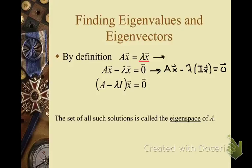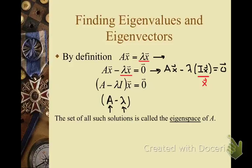Notice that in the next step I want to combine A with lambda, but it would not be appropriate to say A minus lambda, because A is a matrix and lambda is a scalar. The goal is to make lambda times x look like a matrix expression. We use the fact that I times x equals x, so we can rewrite it as (A minus lambda I) times x. Lambda I is now a matrix, and we are subtracting it from A, which is another matrix. These two equations are equivalent.